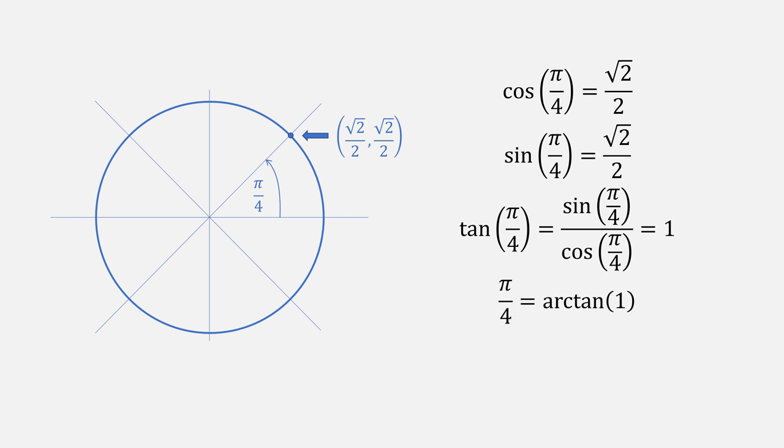Therefore, we take the inverse tangent of both sides, known as the arctangent. This means that Pi over 4 is equal to the arctangent of 1. Multiply both sides by 4, and we get Pi. Now all we need is a way to compute the arctangent.